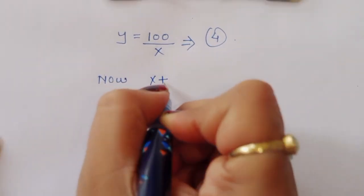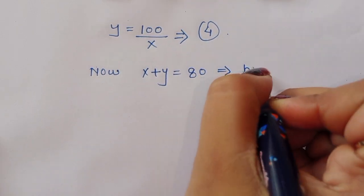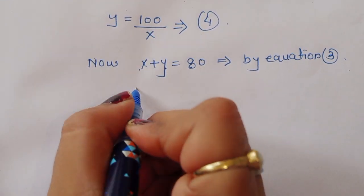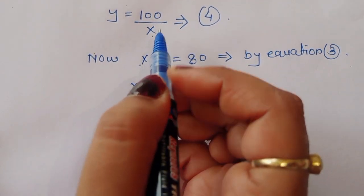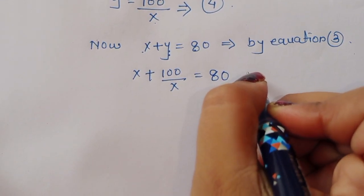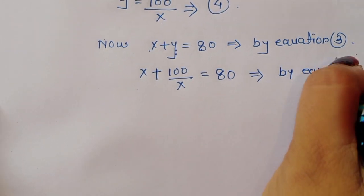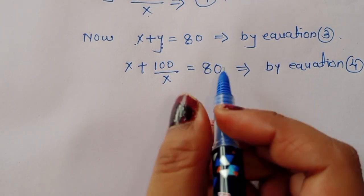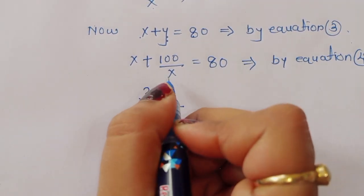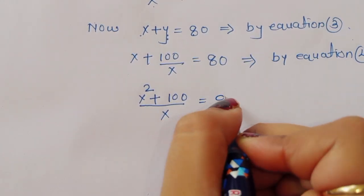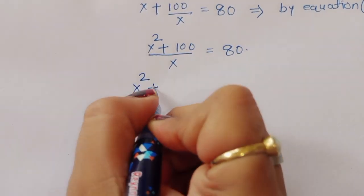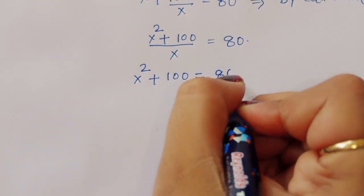Now from equation 3, x + y = 80. Substituting y = 100/x, we get x + 100/x = 80. Taking LCM: x² + 100 = 80x, so x² − 80x + 100 = 0.